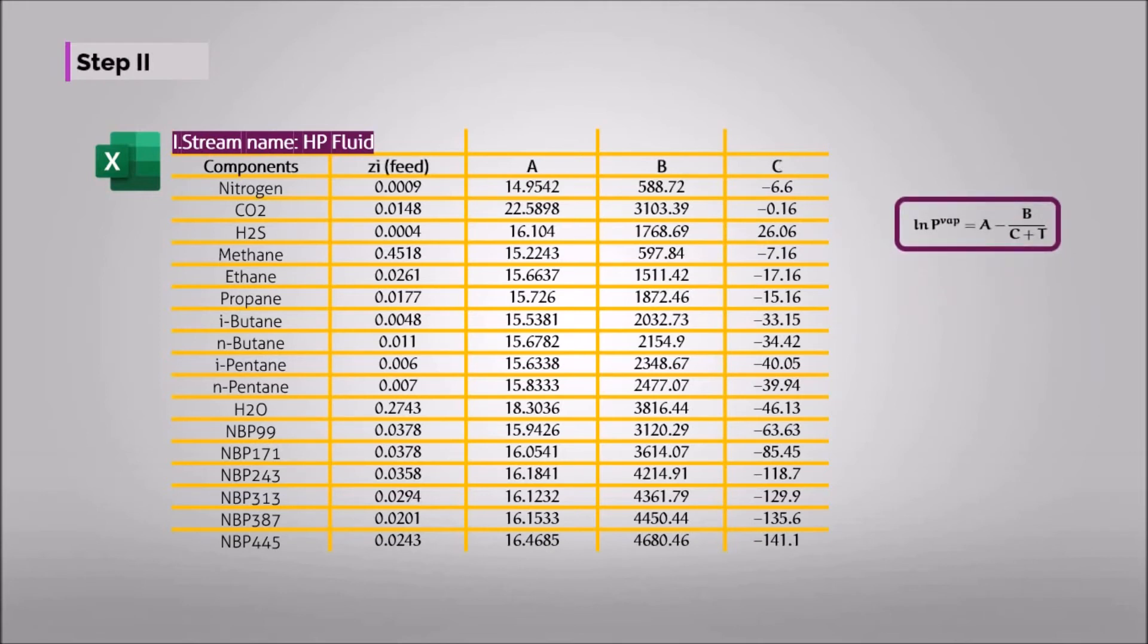The second step is calculating the vapor liquid equilibrium ratio, that is k, which is the ratio of the vapor pressure of the component to the system operating pressure.